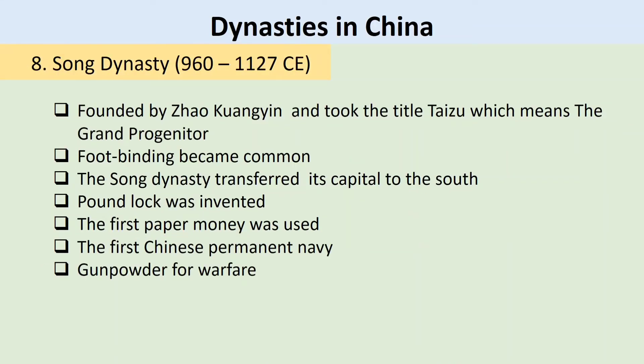Song Dynasty, from 960 to 1127 CE. The chaos in China after the collapse of the Tang Dynasty led to the breakup of China into five dynasties and ten kingdoms. It was during this time when once again one warlord would rise to power and unite at least some of the various states into a unified realm under the leadership of Emperor Chao Kuang Yen of the Song Dynasty. His reign title was Taizu, which means the Grand Progenitor.